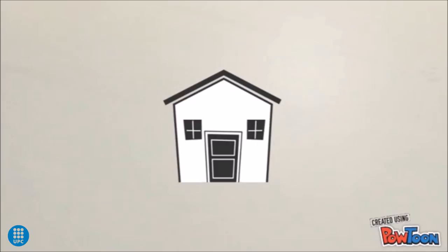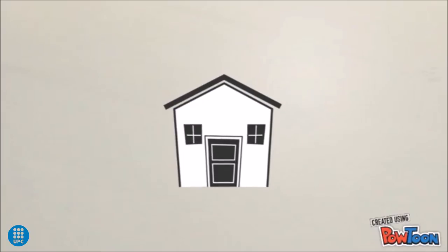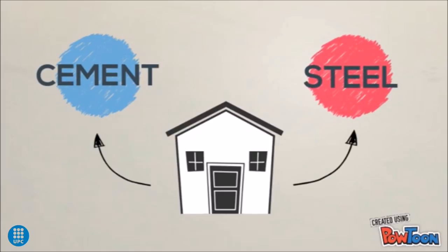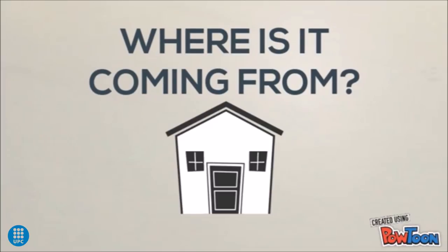Let's take this little house as an example. It's made of the two most used construction materials, cement and steel. To know the footprint of any material, we first need to know where it's coming from.